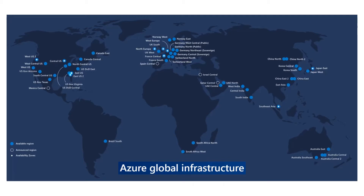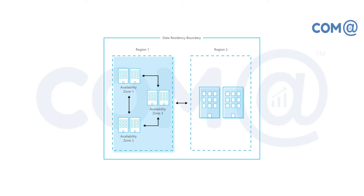We'll start with understanding the Azure global infrastructure, where Azure has many regions and availability zones. For any cloud infrastructure professional, they should be very comfortable and have a good understanding about cloud service providers, data centers, and their infrastructure. We'll understand what is a region, what is an availability zone, and how to choose the region and availability zone based on your environment requirement.